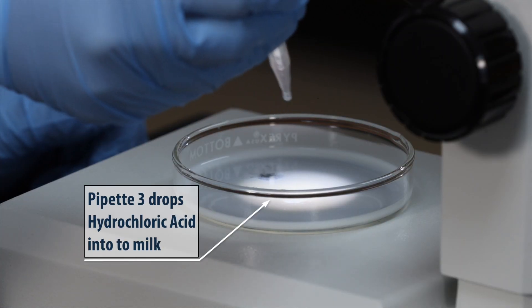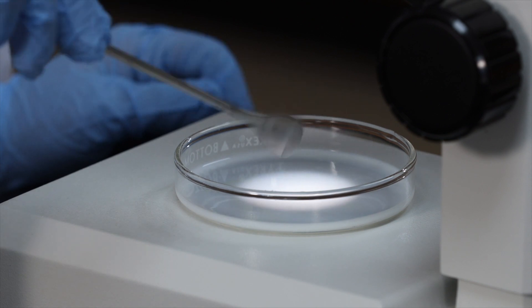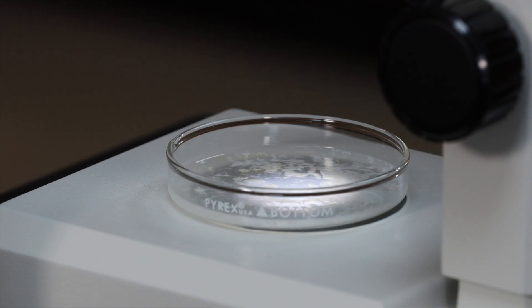Pipette three drops of hydrochloric acid to the milk and carefully mix the solution with a stirring rod. Repeat this process two more times. Soon, the pH change causes the milk to curdle.